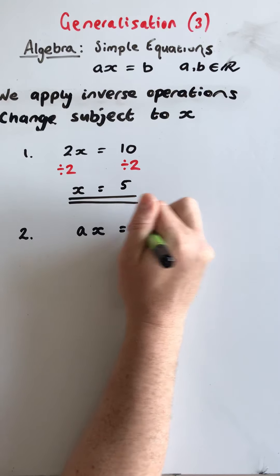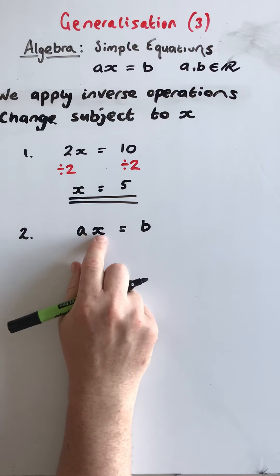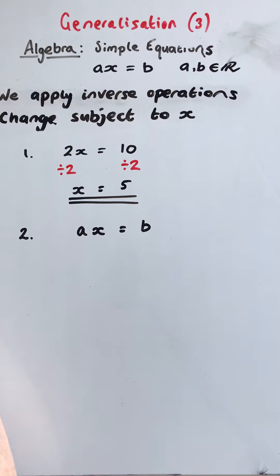ax equals b. So what's happened to x? We want x on its own. It's been multiplied by a.